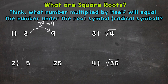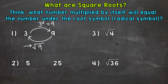Now let's start with that 9 and do the opposite or inverse of squaring a number — and that's going to be taking the square root. So the square root of 9: what number multiplied by itself will equal the number under the square root symbol? This is also known as the root symbol or radical symbol. We know 3 times 3 equals 9, so the square root of 9 is 3.